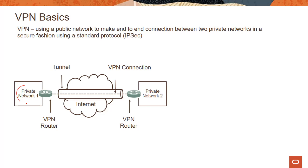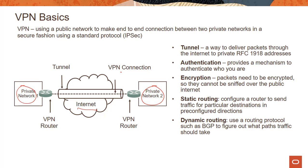You have two different networks — private network one and private network two — and they want to create an end-to-end connection over an unsecured channel like the internet. Using VPN, they can do that. The first key characteristic is the tunnel: a way to deliver packets through the internet to RFC 1918 addresses, meaning private network addresses. There is authentication where you have to authenticate who you are. The really important piece is encryption — packets need to be encrypted so they cannot be sniffed over the public internet.